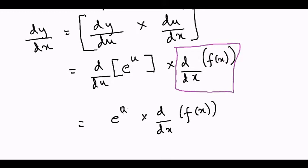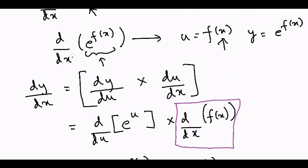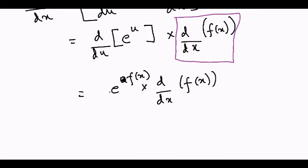Now u is f(x), so we can just replace it as f(x). Basically, when we get a function of the form e to the power f(x), the derivative is e to the power f(x) unchanged times the derivative of f(x).